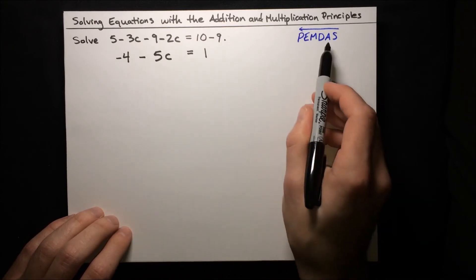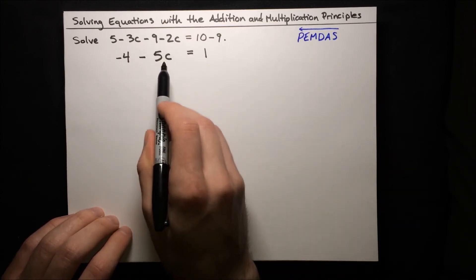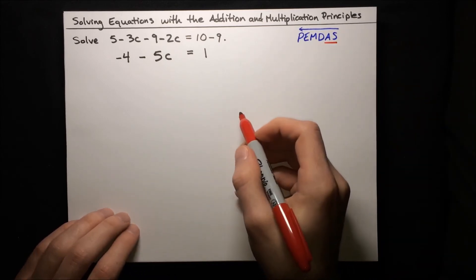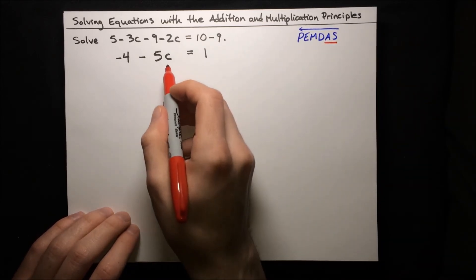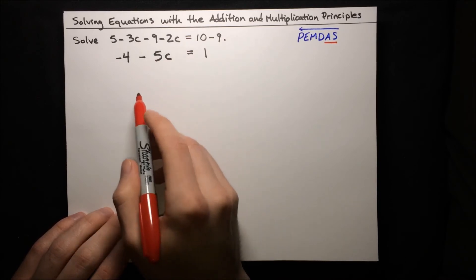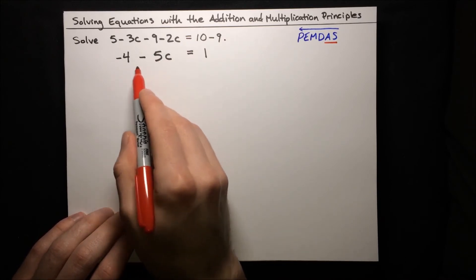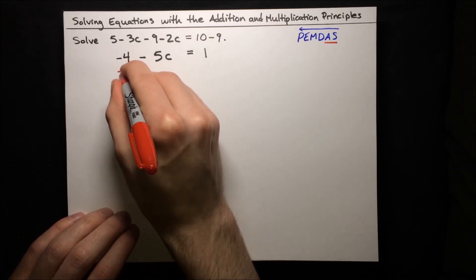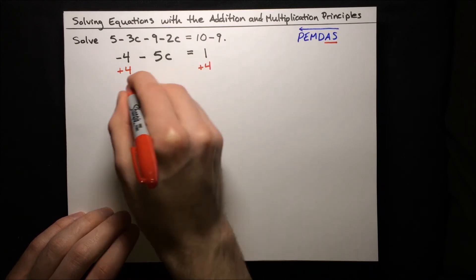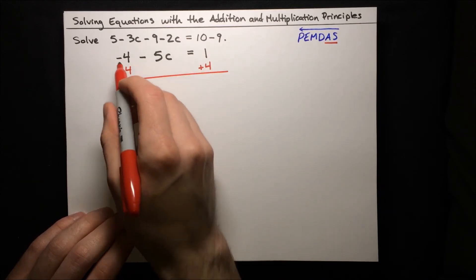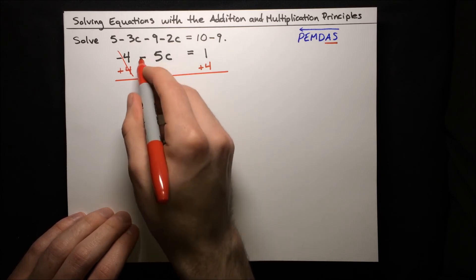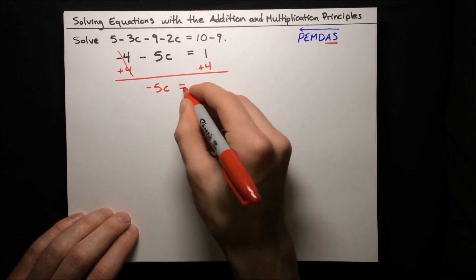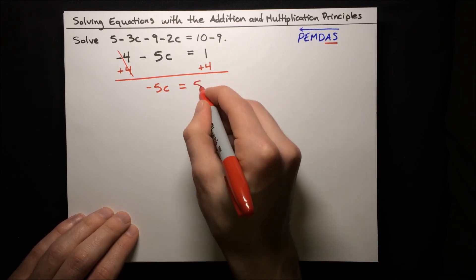We're ready to start using the law of opposites to solve. First, we'll use addition and subtraction. We want to get c alone on one side, and that negative 4 is keeping us from that. So let's add 4 to both sides. Negative 4 plus 4 cancels out to 0, leaving negative 5c on the left side, and 1 plus 4 equals 5 on the right side.